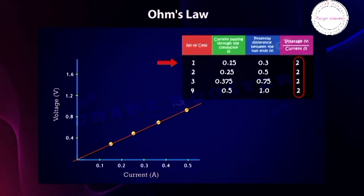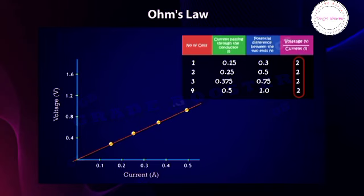With one cell: current = 0.15 A, voltage = 0.3 V. With two cells: current = 0.25 A, voltage = 0.5 V. With three cells: current = 0.375 A, voltage = 0.75 V. With four cells: current = 0.5 A, voltage = 1.0 V. The V-I graph shows a straight line passing through the origin, indicating that V is proportional to I, or V/I is constant. That constant is resistance R, so V/I = R, giving us V = IR, or I = V/R.